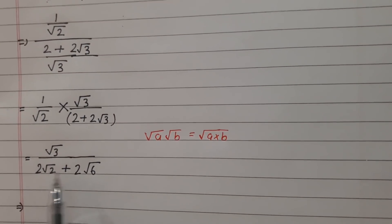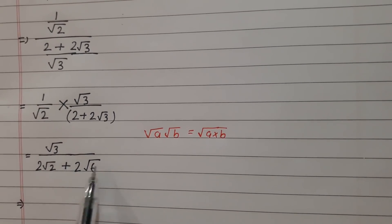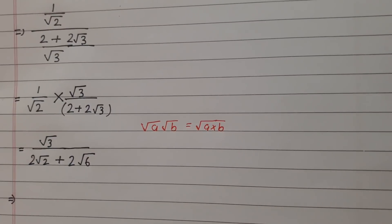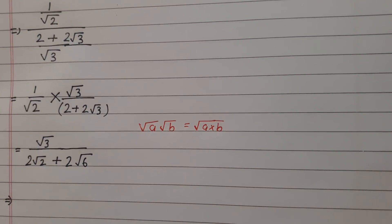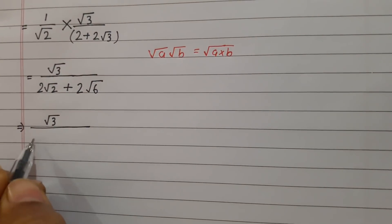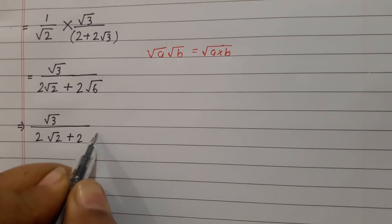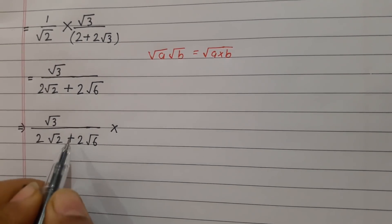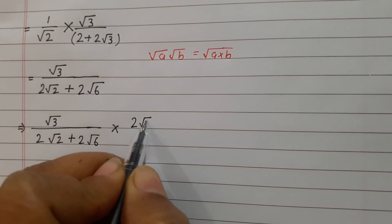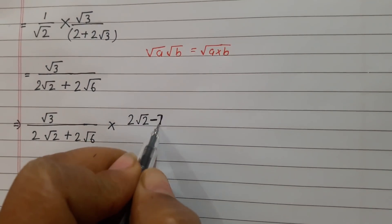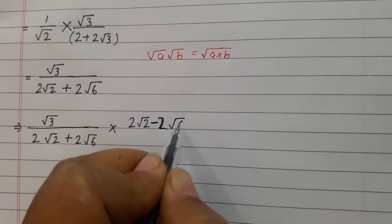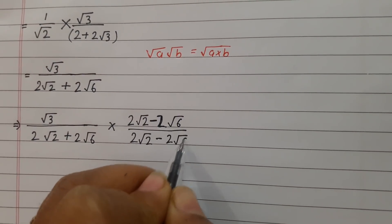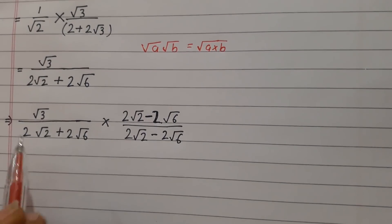This expression is solved in the numerator, but in the denominator there is an irrational number with a root. So we take a method for the root — rationalization. You have to rationalize the denominator. The expression is root 3 divided by 2 root 2 plus 2 root 6. To rationalize, we multiply by the conjugate: 2 root 2 minus 2 root 6 over 2 root 2 minus 2 root 6.